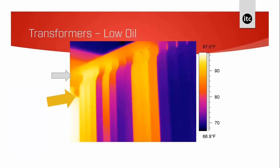Low oil in a substation: the fill level of these units is crucial for cooling — the oil expands and flows into the radiator tubes to release warmth to the environment. We can quite clearly see in this image several different levels of cooling happening, indicating that oil level is causing the issue.